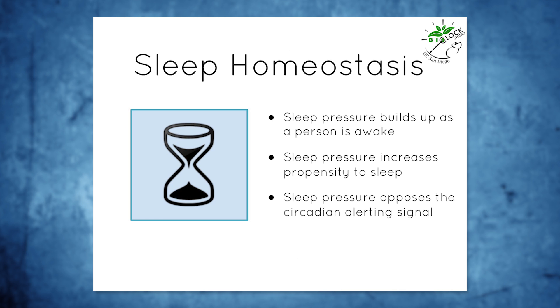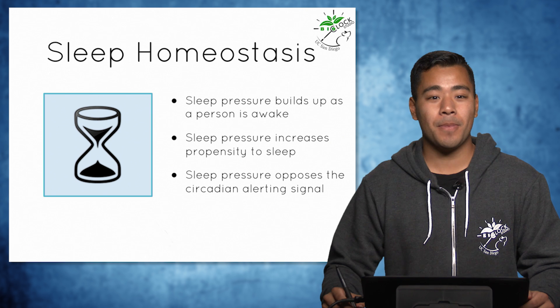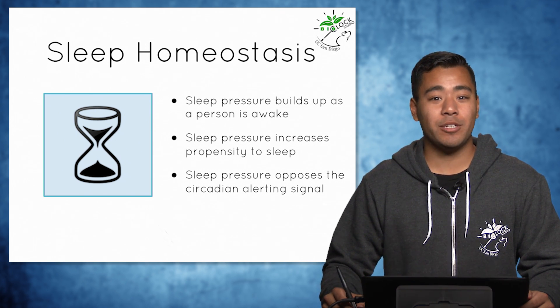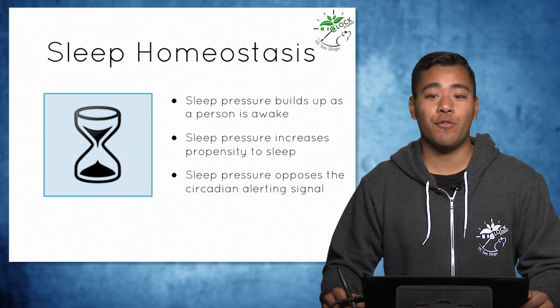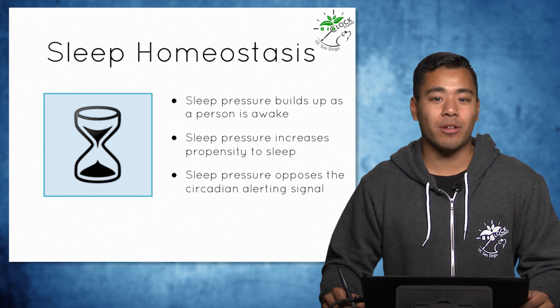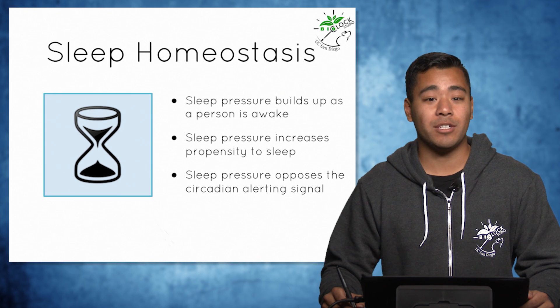That brings us to the second process involved in sleep-wake cycles called sleep homeostasis, also known as process S. Unlike the circadian clock, which re-initiates a cycle on its own every 24 hours just like an oscillator, process S is more like an hourglass that requires an event to restart it.